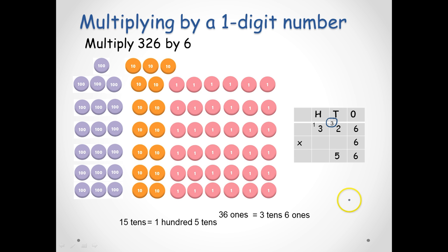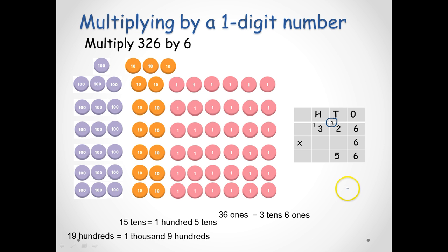Now we multiply the hundreds. 300 multiplied 6 times gives us 18 hundreds. 18 hundreds plus 1 hundred would be 19 hundreds. We rename the 19 hundreds to 1 thousand and 9 hundreds. So we have 9 hundreds and 1 thousand. So 326 multiplied by 6 gives us the answer 1,956.